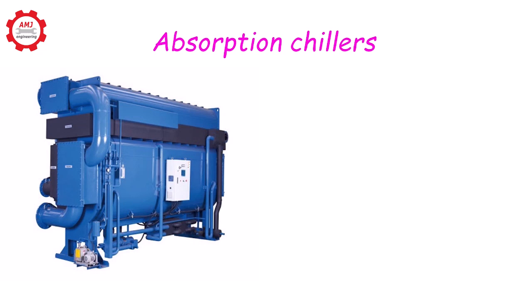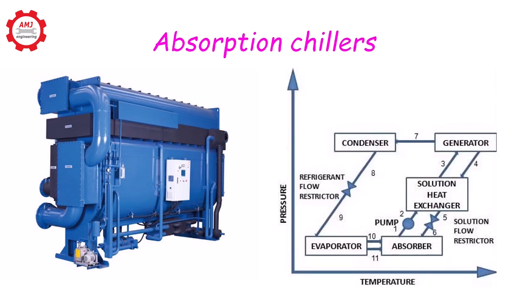Absorption chillers: The absorption cycle uses heat to generate cooling using two media - a refrigerant and an absorbent. Water-lithium bromide is the most common refrigerant-absorbent media pair, but other pairs can be used.